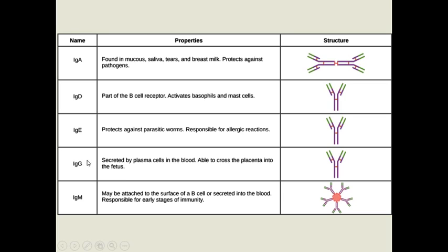IgG is important because of its small size — it can cross the placenta into the fetus. If there is any antigen in the fetus that IgG recognizes, it will attack the fetal red blood cells or tissues. For example, if a woman is infected by HIV and has IgG against HIV, this passes the placenta and the fetus may test positive for HIV even if not infected, because of maternal antibodies.